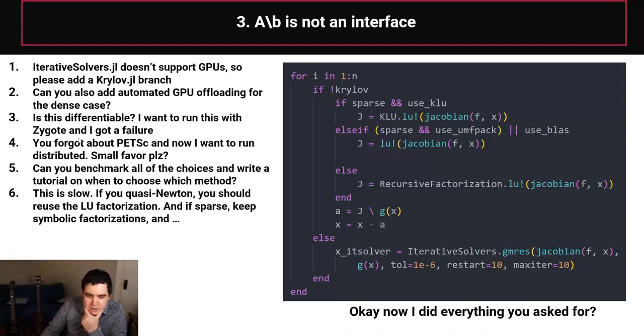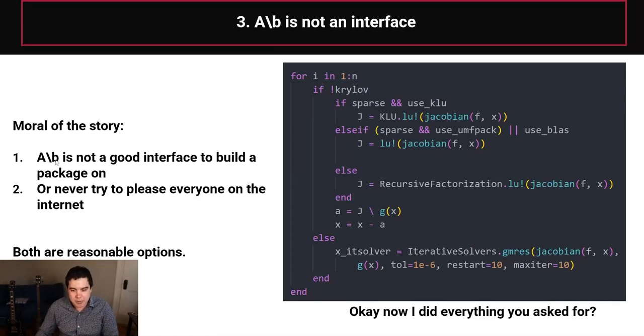you no longer have differentiability for this main case. So can you please add automatic differentiation support on top of this? And oh, you forgot PETSC. So can you add a distributed branch? And oh, if you do quasi-Newton, now you want to reuse the factorizations in this case, and you can see where this is going. So the real issue is if you want to actually handle A backslash B effectively inside of a package, you have two options. So the moral of the story here is, it's just